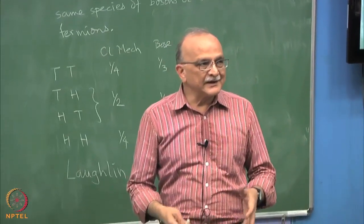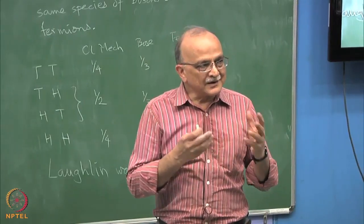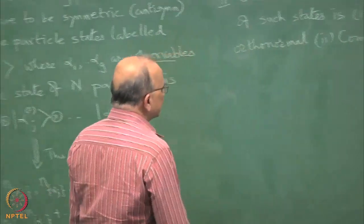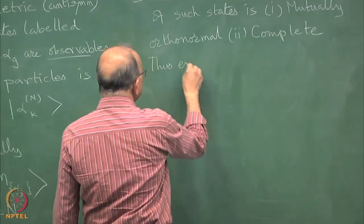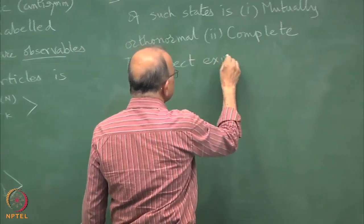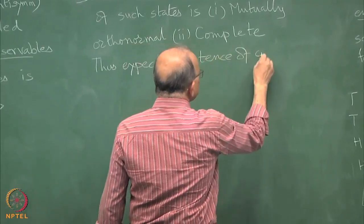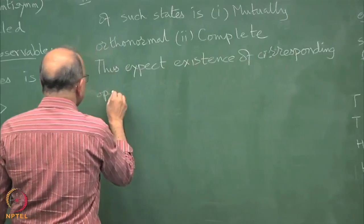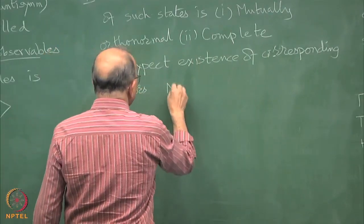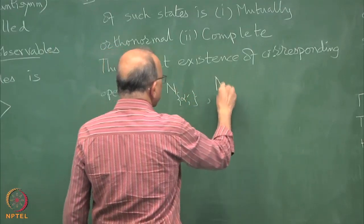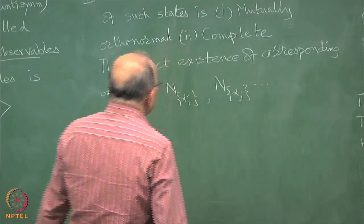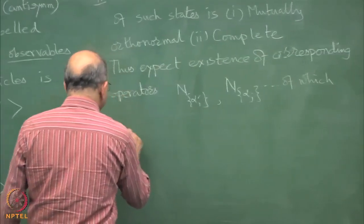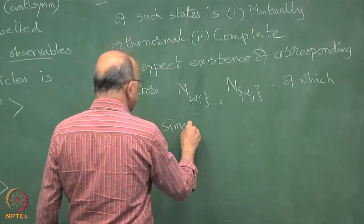Because of this fact that they are mutually orthonormal and complete, you can think in reverse that therefore, there must we are tempted to introduce Hermitian operators of which their eigen sets. Because a complete and mutually orthonormal suggests that there are some Hermitian operators of which these are Eigen vectors, these are simultaneous Eigen vectors.